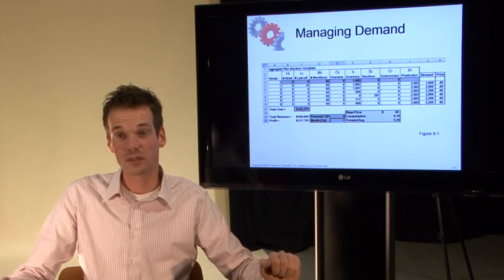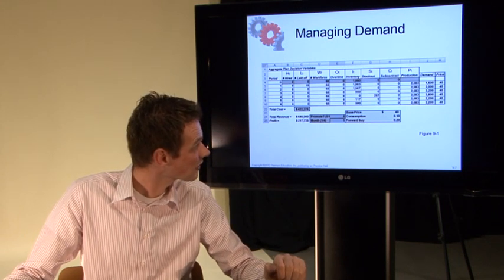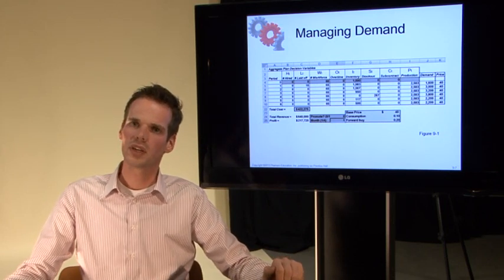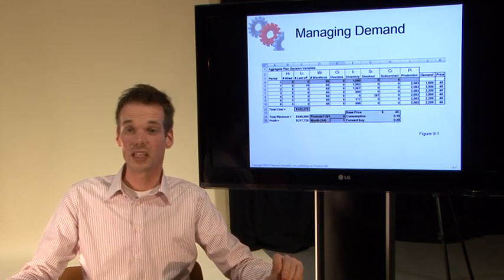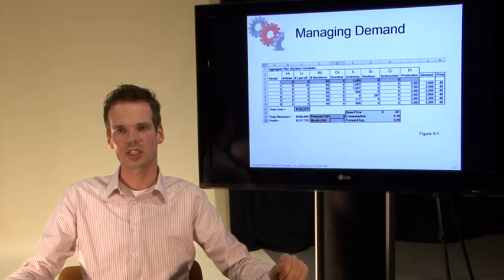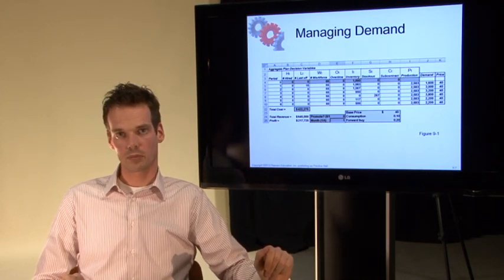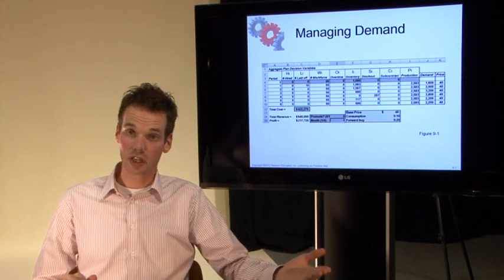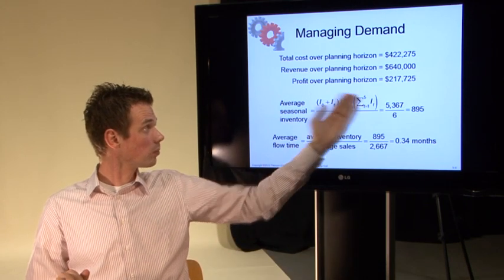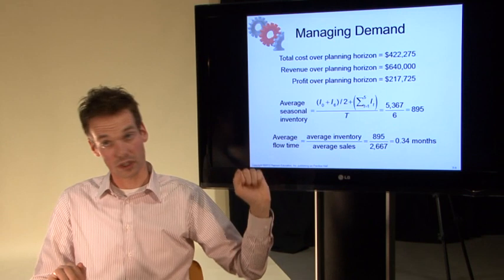In January the demand is 1500 pieces and in April the demand is 3800 pieces. So what would happen if you come up with a price discount in January being low period and in April being high season? But in this case, let's find out what would happen if we do not change the price at all. Then the profit over the whole planning horizon, in this case six months, is 217,725.